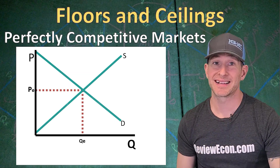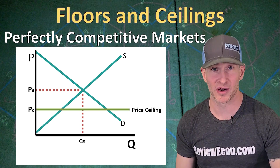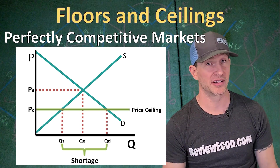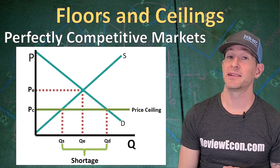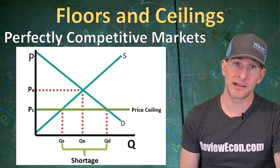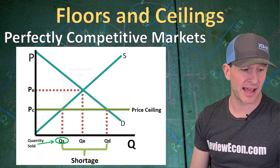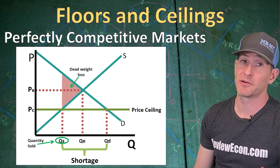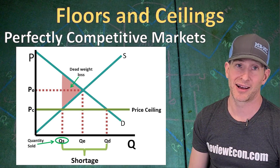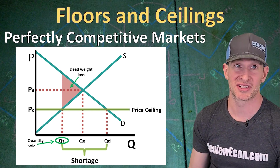If on the other hand we have a price ceiling that goes below equilibrium — if it's effective — then that is going to cause a shortage. The quantity demanded is going to be greater than the quantity supplied. Again, the quantity that is sold will be lower than the equilibrium quantity, and at that lower quantity we will have that triangle of deadweight loss. Again, the government intervention has created inefficiency here.